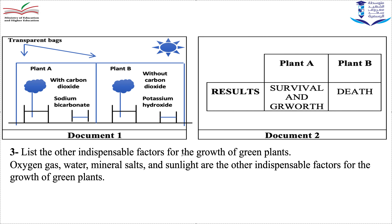Question 3: List the other indispensable factors for the growth of green plants. The plant also needs oxygen, water, mineral salts, and sunlight — all very important. In this experiment we studied the importance of carbon dioxide only. Similarly, if studying mineral salts, one plant gets mineral salts and the other does not; if studying water, one plant gets water and the other does not; if studying sunlight, one is exposed to light and the other placed in darkness. You can try the same experiment at home.